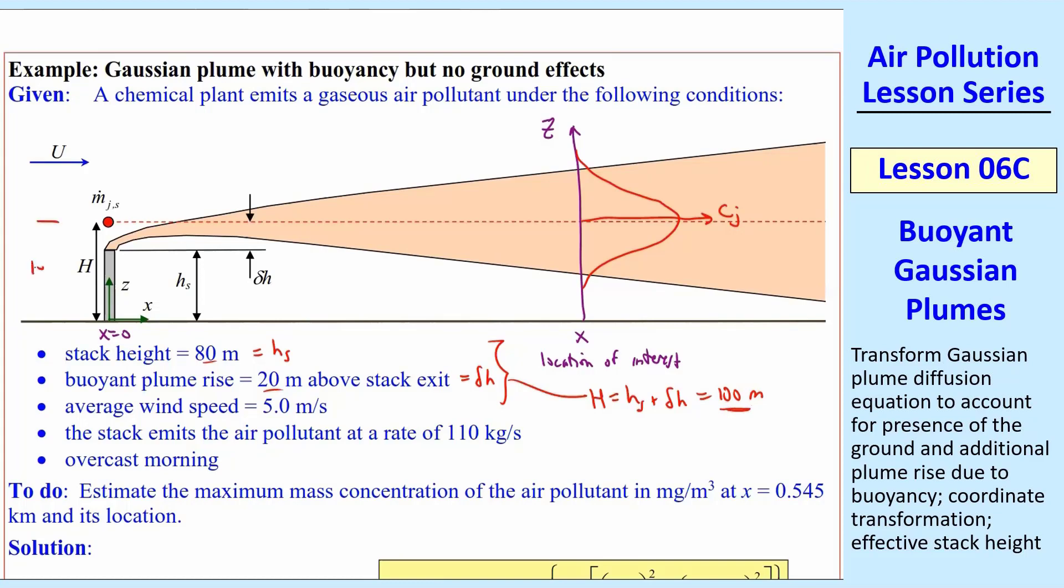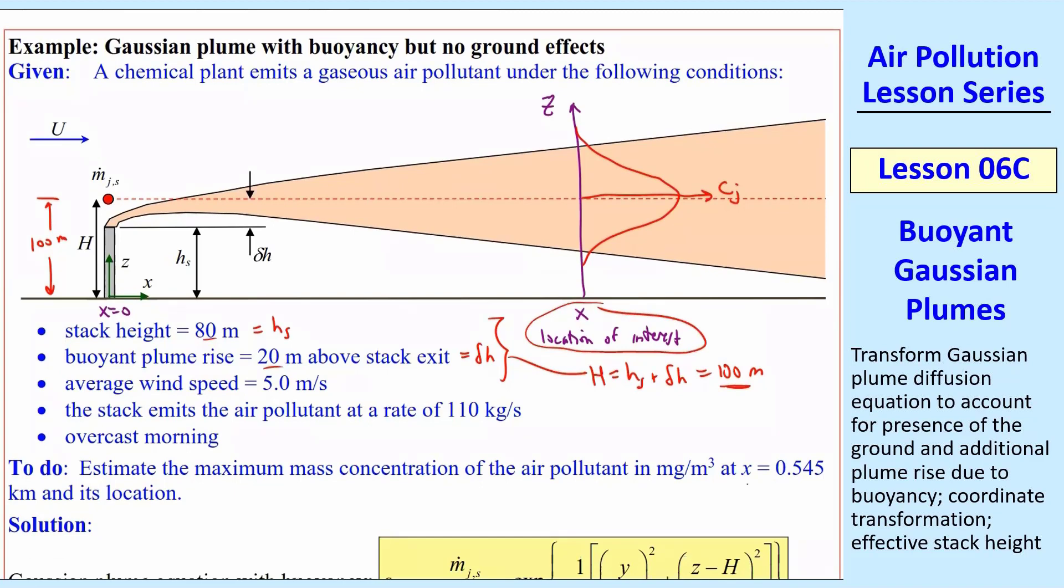So that's what this location is then. In this particular example, the source is up at 100 meters. And then we have our mass concentration distribution, Gaussian, at some x location of interest. And that's where we define here x as 0.545 kilometers. At this point of interest, we also have capital U of 5.0 meters per second. And then the stack emits pollution at 110 kilogram per second. So that's our M.JS. Once we label everything, it's just a matter of plugging into the equation.